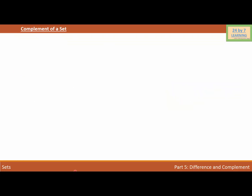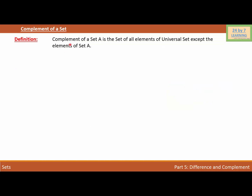Now let's talk about the complement of a set. The complement of a set is the set of all elements of the universal set except the elements of set A. In other words, to find the complement of any set, we consider all elements of the universal set except those in set A. The symbol used to represent the complement of set A is A dash (A').